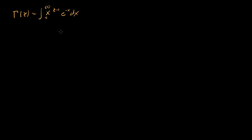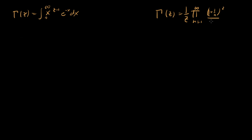We also saw in the previous video that there was another way of writing the gamma function — in terms of an infinite product. There we saw that gamma of z was equal to 1 over z, times the product from n equals 1 to infinity of (1 plus 1 over n) to the z, divided by (1 plus z over n).